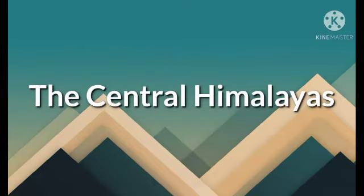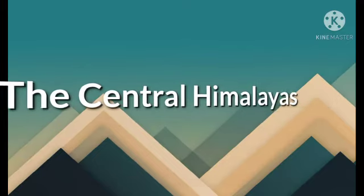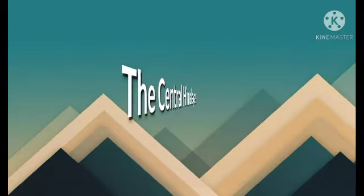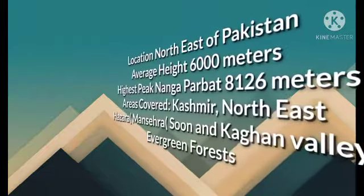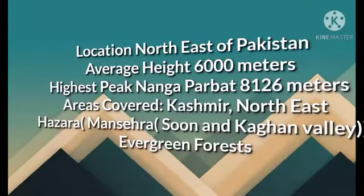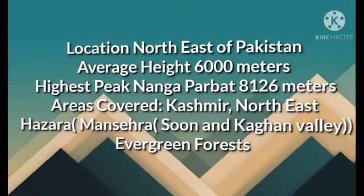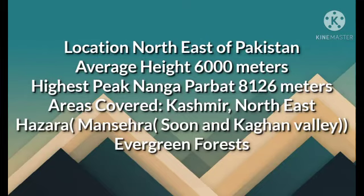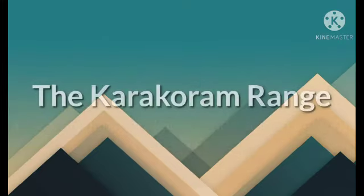After the Pir Panjal Range, let's talk about the Central Himalayas. The Central Himalayas lie further in the north of the Lesser Himalayas, in the northeast direction, and their average height is 6,000 meters. The highest peak is Nanga Parbat, with a height of 8,126 meters. This area hosts many of the highest mountains of the world. The areas covered include Kashmir, northeast Hazara, mainly Mansehra and its valleys, the Soon and Kaghan Valley, and this area is characterized by evergreen forests.